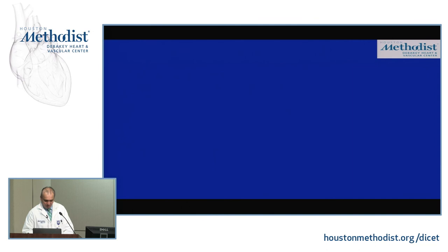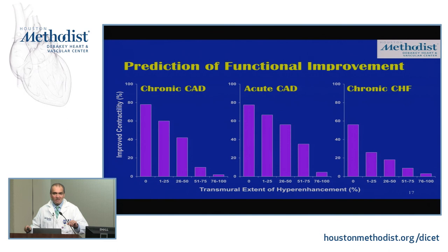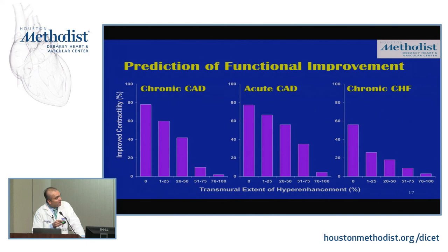It is important to keep in mind that traditionally we think about viability in patients being considered for revascularization, but viability may also predict likelihood of improvement in stunned myocardium. Studies in patients presenting with acute coronary disease show the same inverse relationship — as the extent of hyper-enhancement increases, the likelihood of improvement after primary PCI decreases. Even in patients who are not revascularization candidates on medical therapy alone with chronic heart failure, likelihood of improvement is inversely related to extent of hyper-enhancement.